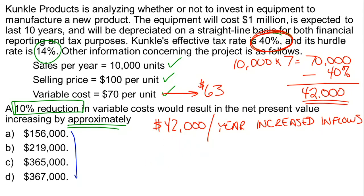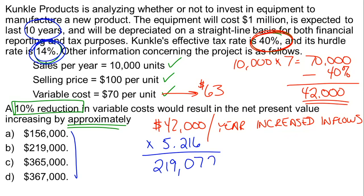What we need to do is go to the present value annuity table — which will be provided — and get the present value of an annuity factor for 10 years at 14%, the hurdle rate given. That factor is 5.216. We multiply $42,000 by 5.216 and get $219,072. That's not an exact answer choice, but the question says approximately, and $219,072 is very close to $219,000, which is the correct answer.